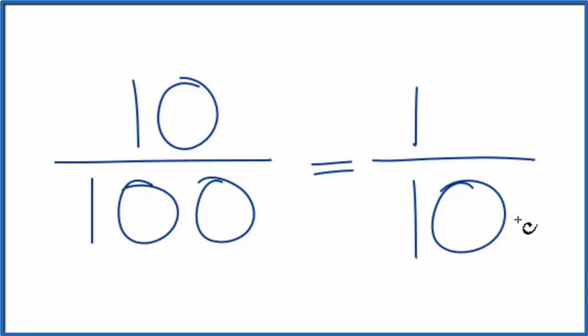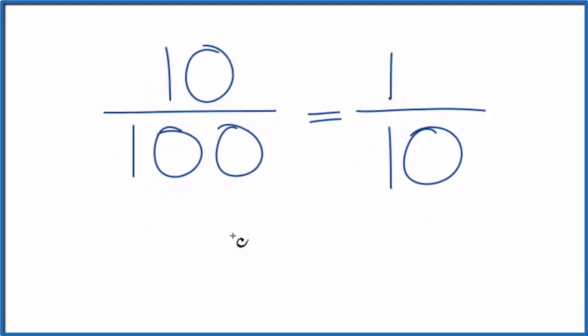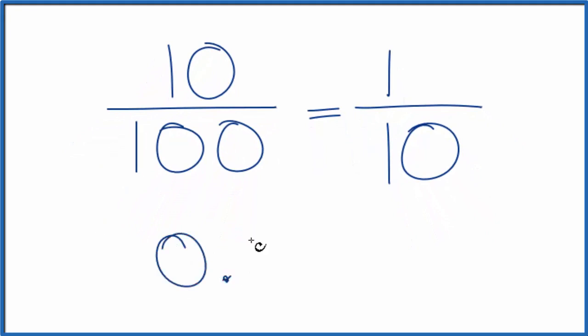If we check these with our calculator, we'll find we take 10 divided by 100, that's 0.1. 1 divided by 10, that is 0.1. And that's because they're equivalent fractions.